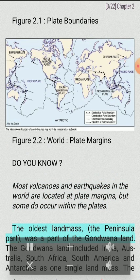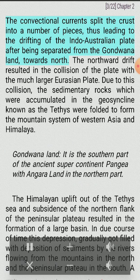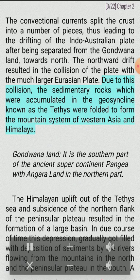The oldest landmass, the peninsula part, was a part of the Gondwana land. The Gondwana land included India, Australia, South Africa, South America and Antarctica as one single landmass. The convectional currents split the crust into a number of pieces, thus leading to the drifting of the Indo-Australian plate after being separated from the Gondwana land towards north. The northward drift resulted in the collision of the plate with the much larger Eurasian plate. Due to this collision, the sedimentary rocks which were accumulated in the geosyncline known as the Tethys were folded to form the mountain system of Western Asia and Himalaya.